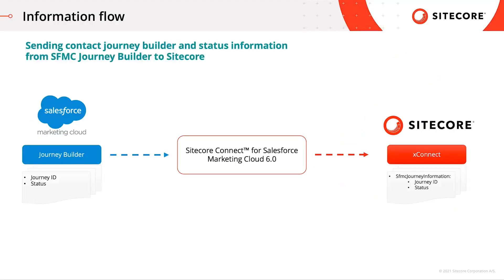When sending contact journey builder and status information from Salesforce Marketing Cloud Journey Builder to Sitecore, the connector takes the journey ID and the journey builder plan ID from Marketing Cloud, along with the status in which the customer is within the journey builder, and sends it into Sitecore XConnect under the facet SFMC Journey Information, where it stores the journey ID and the status of the customer contact.